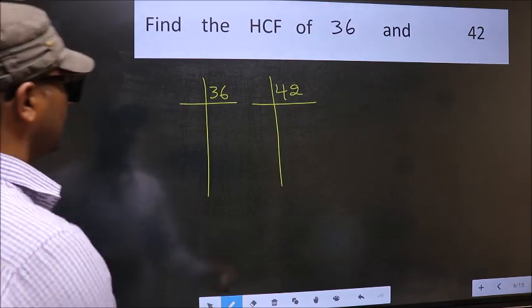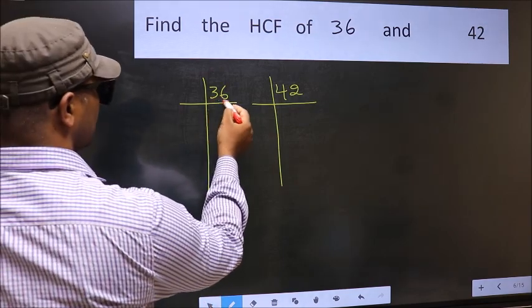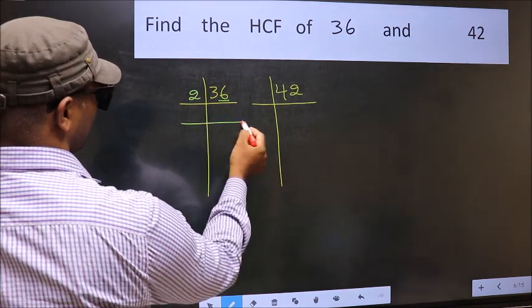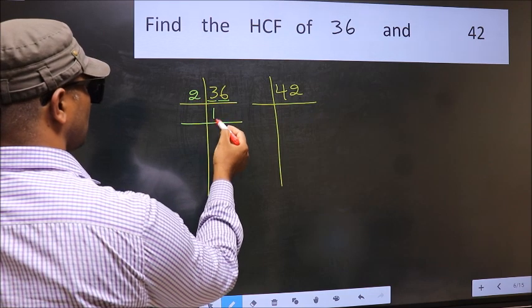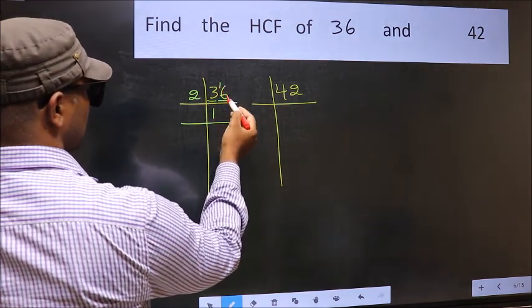Next, in this number, last digit 6, even, so take 2. First number 3. A number close to 3 in 2 table is 2, 1's 2. 3 minus 2 is 1, 1 carried forward 16.